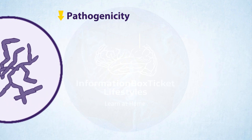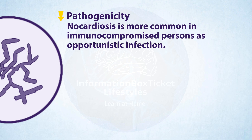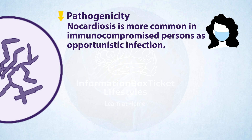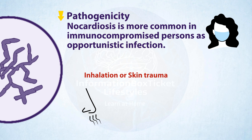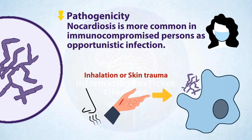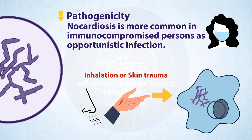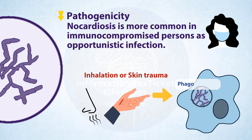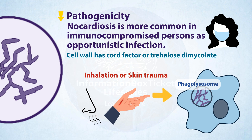Nocardia has a low pathogenicity. Therefore, nocardiosis is more common as an opportunistic infection in immunocompromised persons. It enters the body by inhalation or cutaneous damage and is then absorbed by macrophages. Inside macrophages, it is enveloped in a vesicle known as a phagosome, which generally combines with lysosomes to create a phagolysosome where bacteria are destroyed by lysosomal enzymes. However, Nocardia's cell wall includes a cord factor, or trehalose dimycolate, a glycolipid that prevents phagolysosomal fusion.